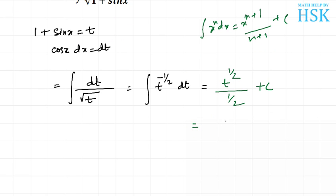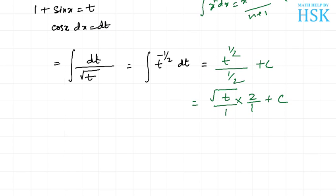Now, this t to the power of 1 by 2 can be written as under root of t, and because this 2 divides the denominator, it can be written as 2 upon 1 plus c. This will be equal to 2 under root of t plus c.